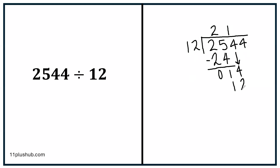Once again, we are going to do column subtraction. So 4 subtract 2 is 2, 1 subtract 1 gives us zero. And then like last time, the next number needs to come down. In this case, it's a 4, and at the bottom we have 24. How many times does 12 go into 24? It goes twice — 12 times 2 is 24. And I have my answer: 212.